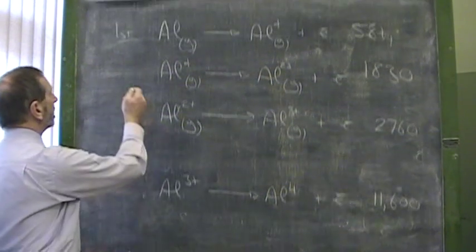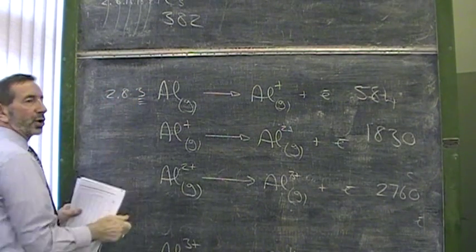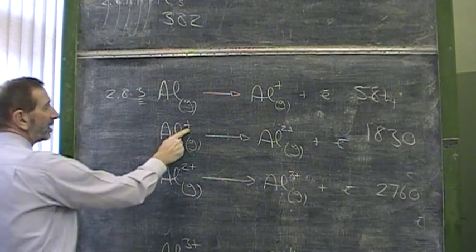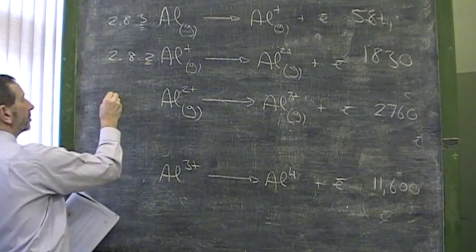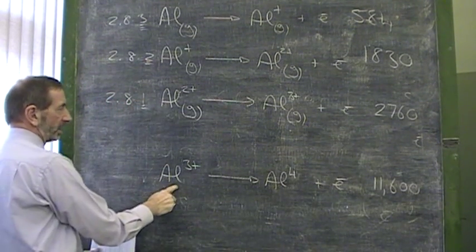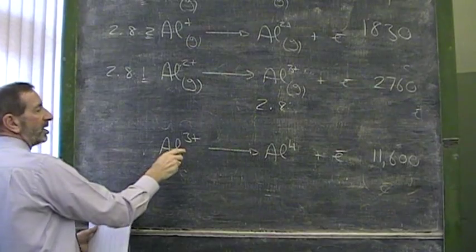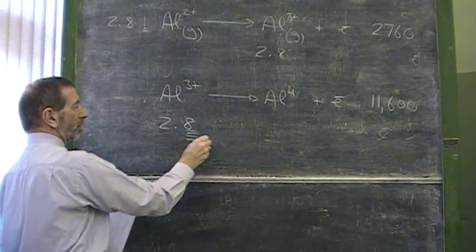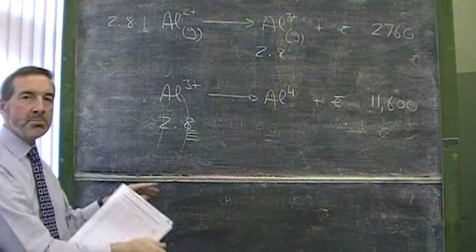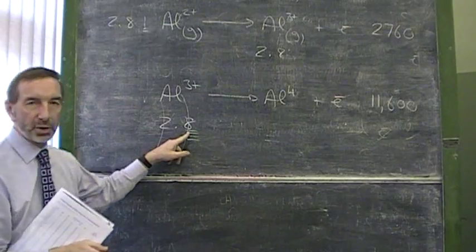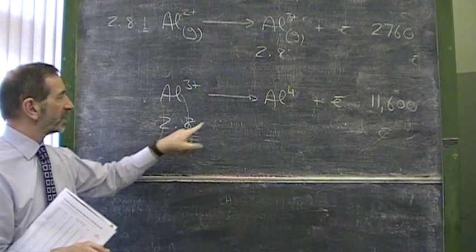This huge number tells us it's suddenly much more difficult to remove this fourth electron. The reason is this. If we go back here, starting at aluminium, we're removing an electron from the third shell. Here, we've removed all the electrons from the third shell. But here, we've removed all the electrons from the third shell. There are none left. And in this case, what we're trying to do is to remove an electron from an inner shell. This shell is suddenly much closer to the nucleus. And not only much closer to the nucleus, it's a stable shell. So for two reasons, it's suddenly much more difficult to remove this fourth electron.